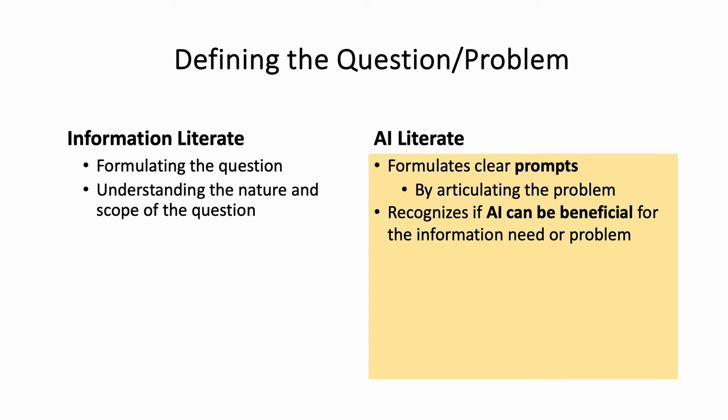Formulating the question and understanding the nature and scope of the question is a fundamental information literacy skill, and this very skill is equally vital when interacting with an AI tool. An AI-literate person needs to know how to formulate clear prompts by being able to first articulate the problem or question, and also needs to ask themselves if using AI would even be beneficial for the nature and scope of that question.